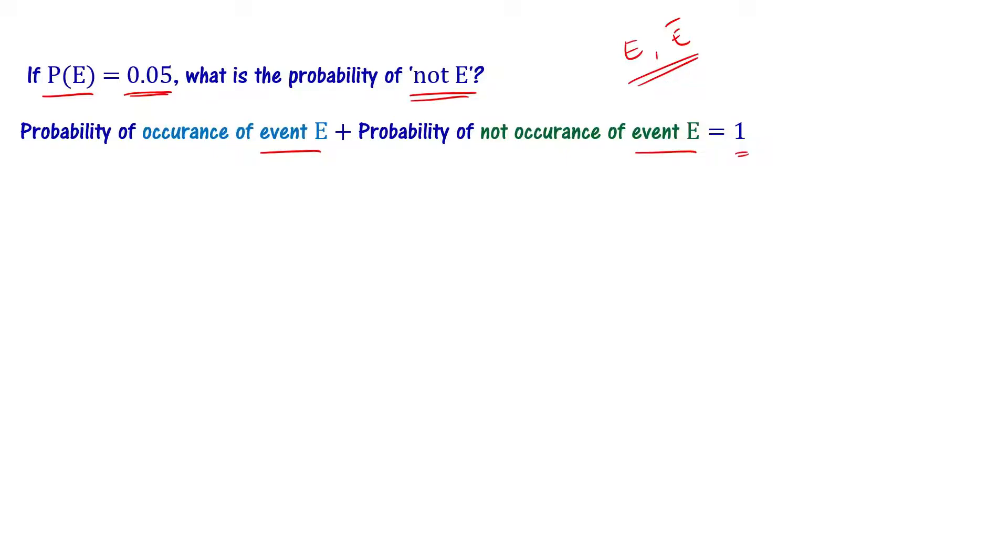Mathematically, we can write it as P(E) + P(not E) = 1. We can use E with an overbar. P(E) + P(Ē) = 1, where E with overbar means not E. So, P(E) + P(not E) = 1. Here, P(E) is given as 0.05. We need to find the probability of not E.